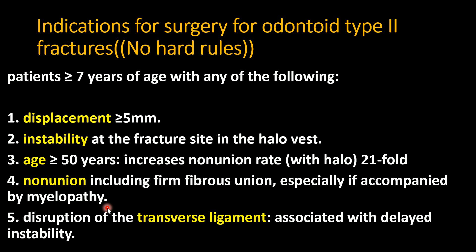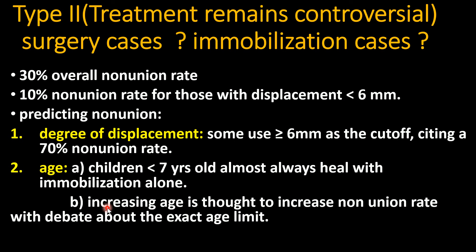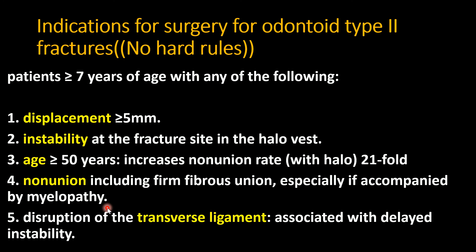Some studies use the 40s and others the late 60s as the age cutoff. Indications for surgery for Type 2 odontoid fracture: in patients under 7 years, healing with external immobilization is likely. In patients over 7 years, surgery is indicated with any of the following: displacement more than 5 millimeters, instability at the fracture site in halo vest, age more than 50 years, non-union including firm fibrous union — especially if accompanied by myelopathy — and disruption of the transverse ligament.